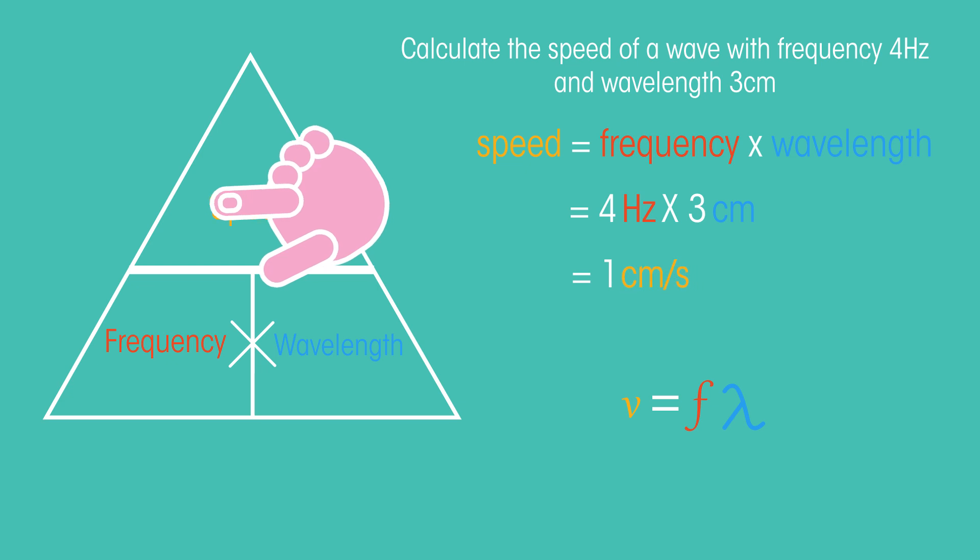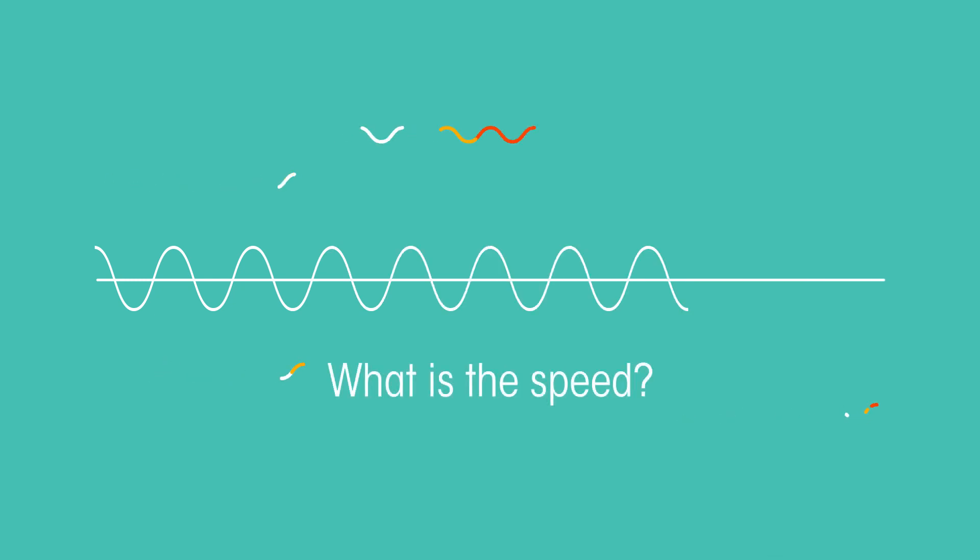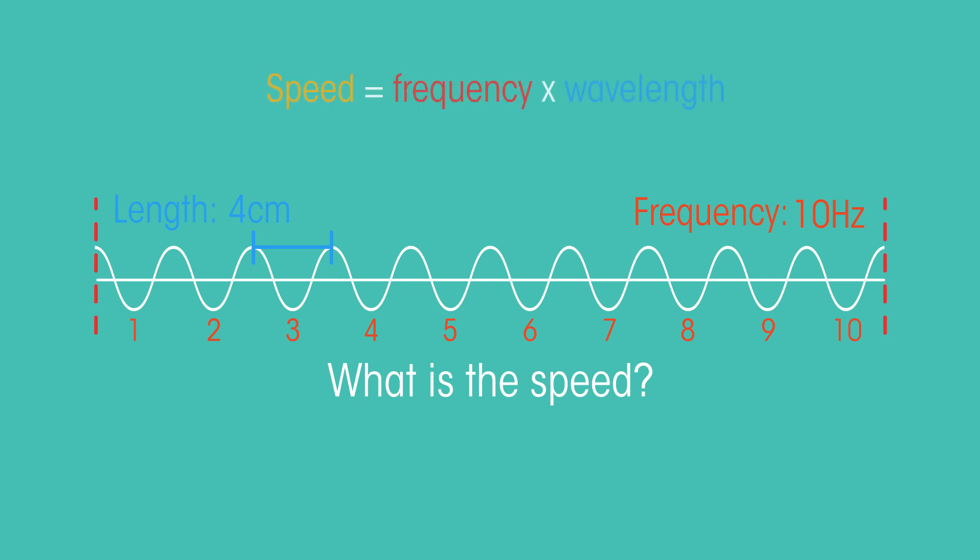Let's have a look at another example. What speed is a wave travelling at if its length is 4 centimeters, and its frequency is 10 Hertz? We'll be using this equation, so we always need to start by writing it down, and we just enter the values from the question.